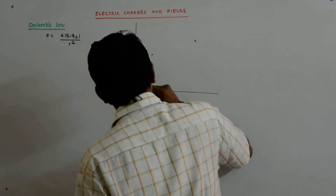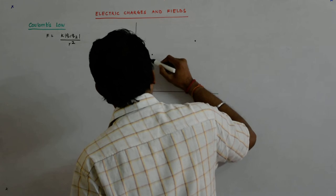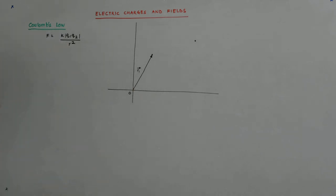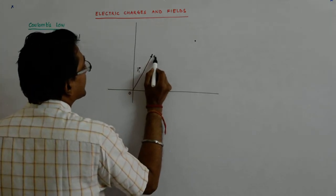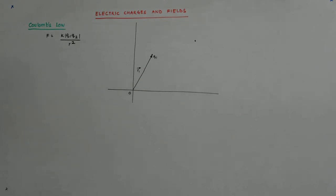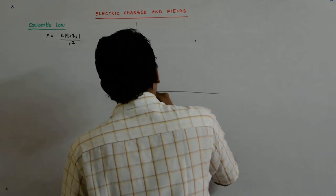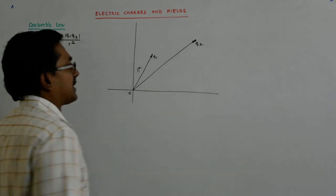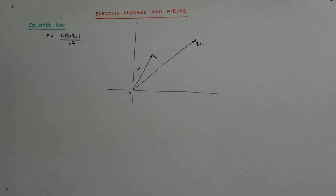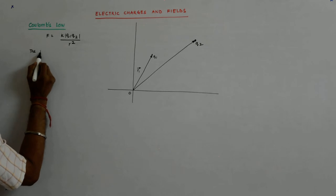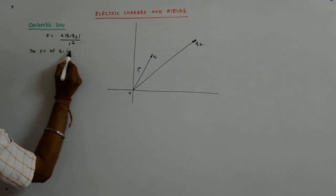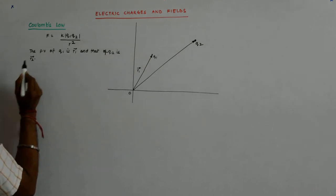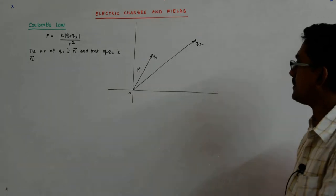Now, what happens? This vector, this is the position vector where my charge q1 is placed, and this is the point where my charge q2 is placed. So the position vector of q1 is r1 and that of q2 is r2.